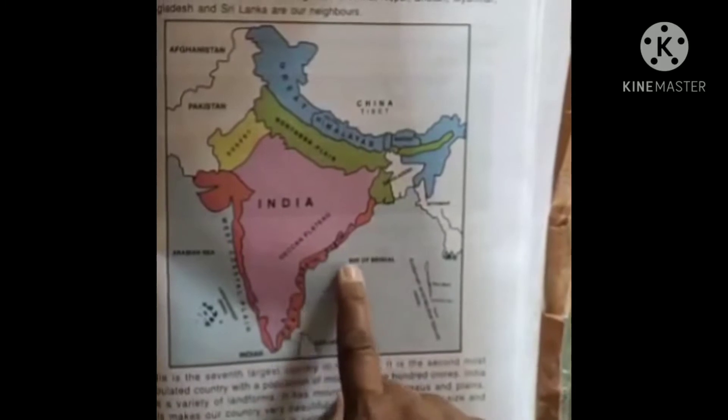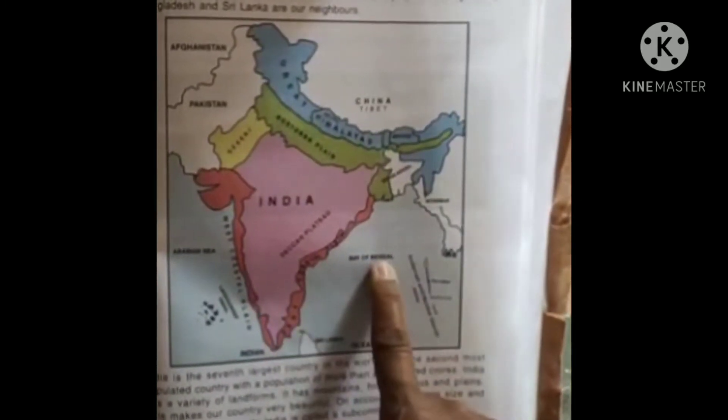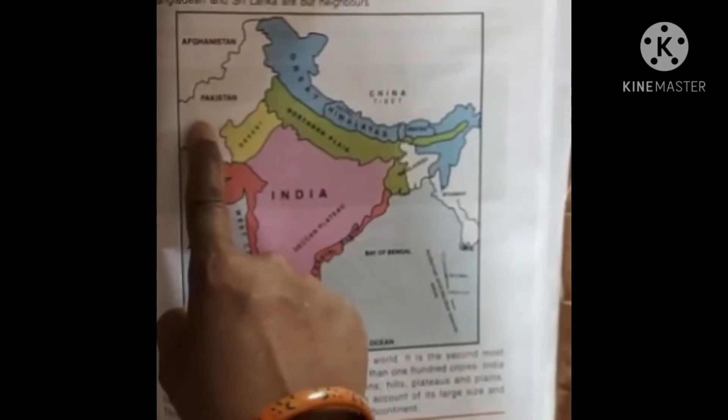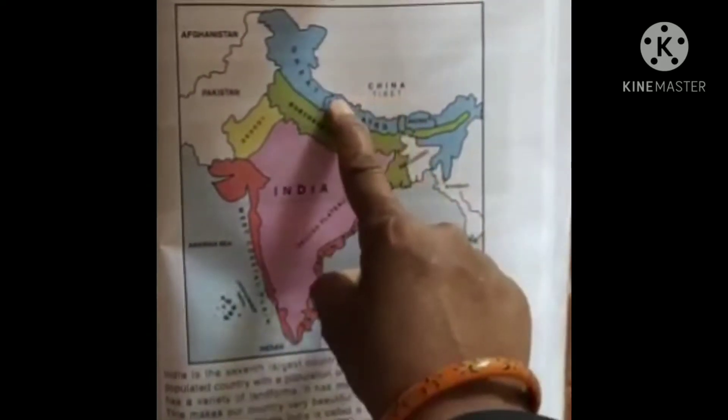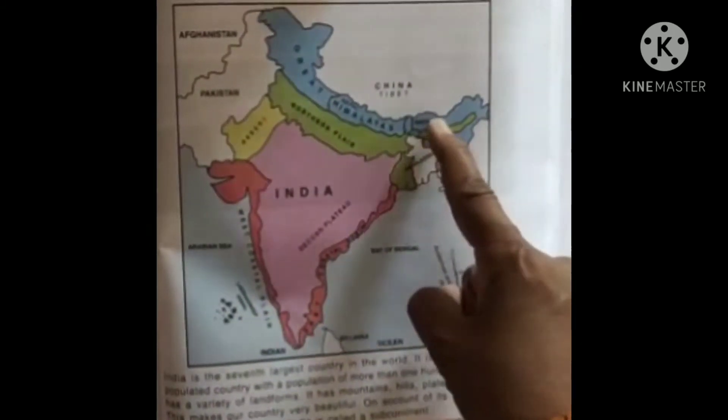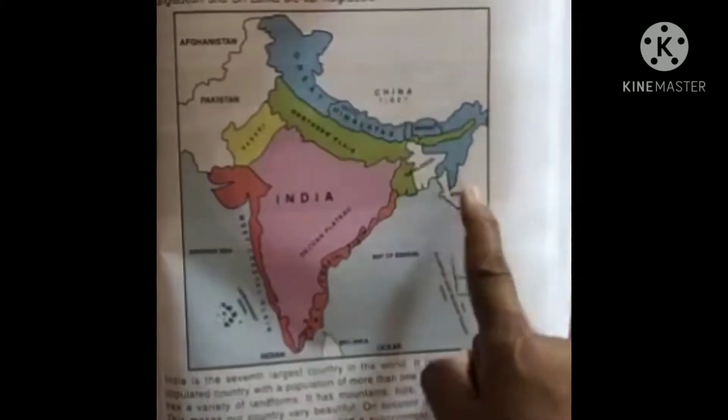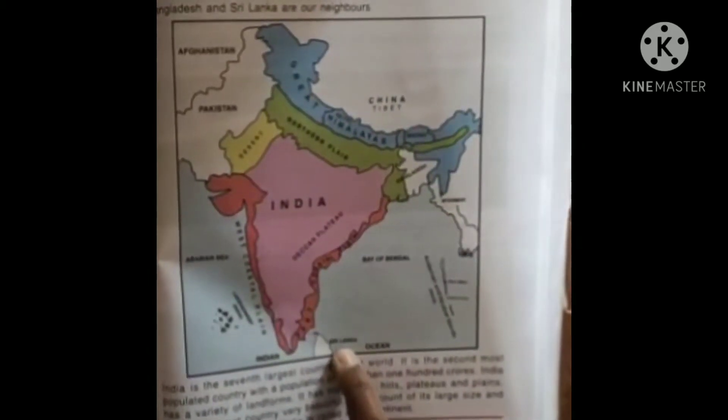Okay students, this is our India map. It is surrounded by seas on three sides. Look at the picture — Bay of Bengal on the east, Arabian Sea on the west, and Indian Ocean on the south. Our neighbors are Afghanistan, Pakistan, China, Nepal, Bhutan, Bangladesh, Myanmar, and Sri Lanka.